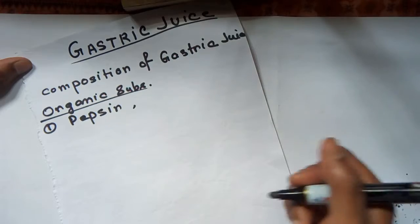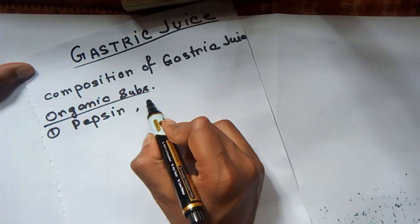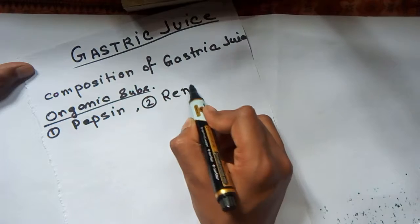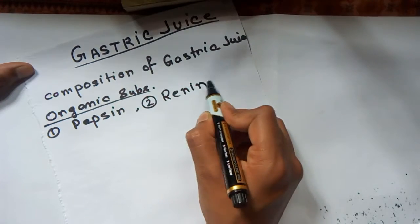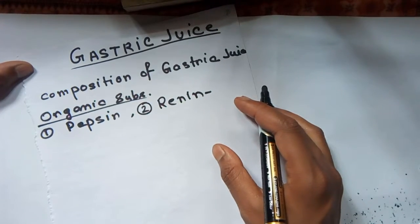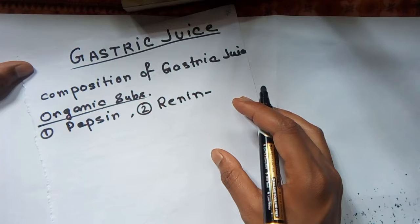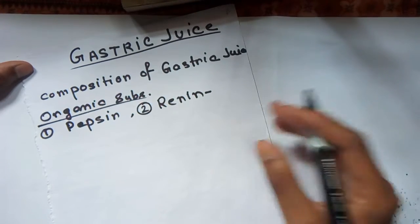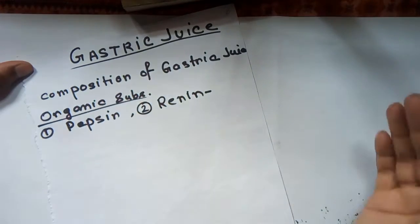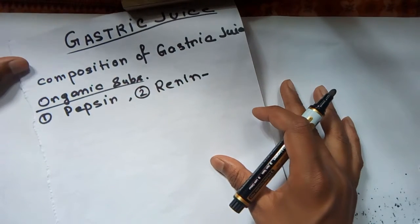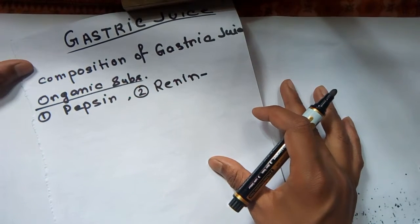Number two is renin. Renin is a milk-curdling enzyme. It is not present in active form in humans — it is present in an inactive form.